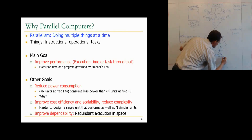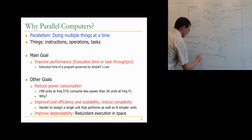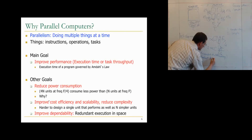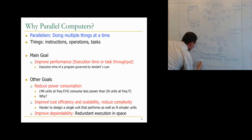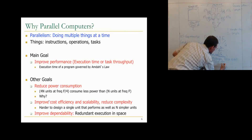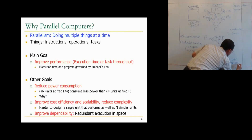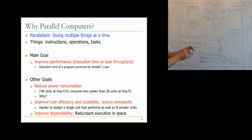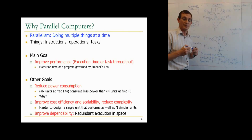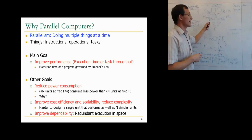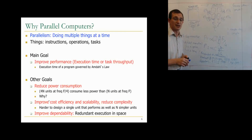You can also do redundant execution in time — using the same unit to execute one copy of the program first, then another copy with some lag between instructions, and checking results before committing. This is called redundant multithreading. A key paper is by Reinhardt and Mukherjee in ISCA 2000, and another by Eric Rotenberg at FTCS 1999, called AR-SMT — Advanced Redundant SMT — where one thread runs ahead and the second follows behind, and before committing an instruction you verify both threads produced the same result.